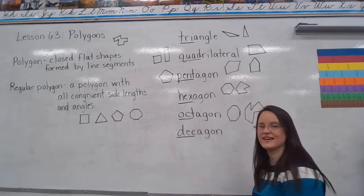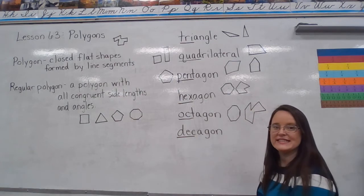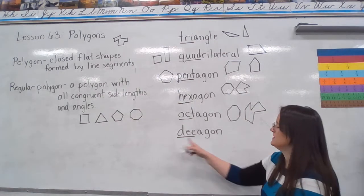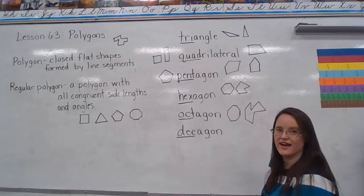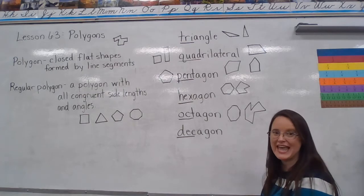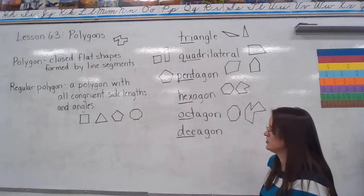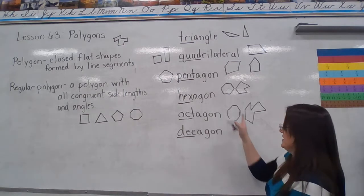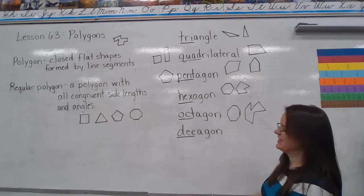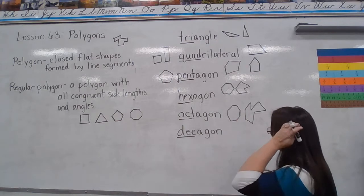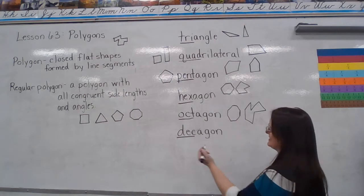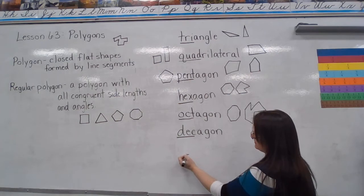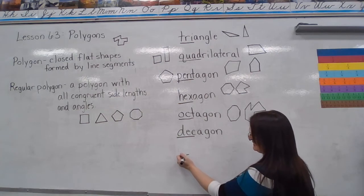We have decagon. Dec means ten. So a decagon is a ten-sided shape. There is a regular decagon — it looks very much like the octagon, it just has ten sides, and the sides are all really tiny.